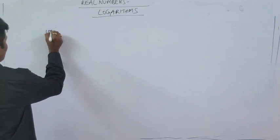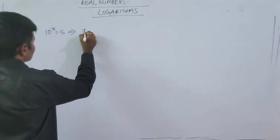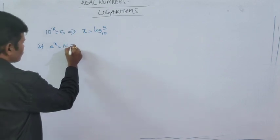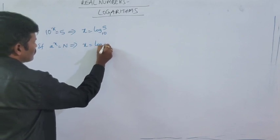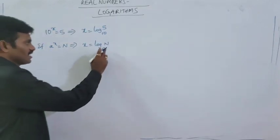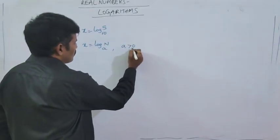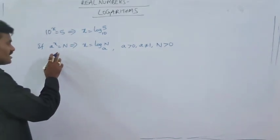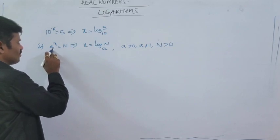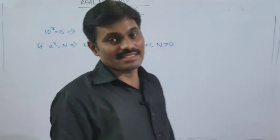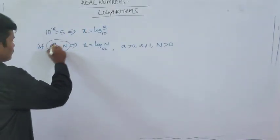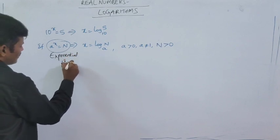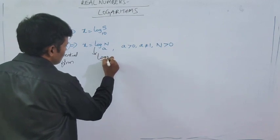So this is a very useful chapter in other subjects as well. Now, how do we define the logarithm formally? If 10 to the power x is equal to 5, then x is equal to log 5 to the base 10. Similarly, if a to the power x is equal to n, then x is equal to log n to the base a. Here n is a natural number, a is greater than 0 and not equal to 1, and n is greater than 0. This is the definition: if a to the power x equals n, then x equals log n to the base a.